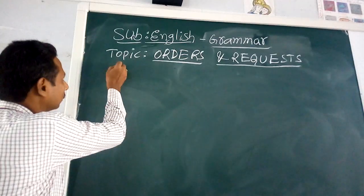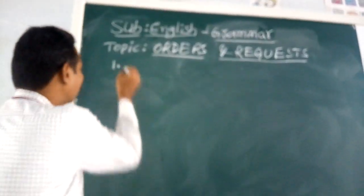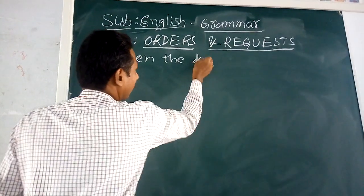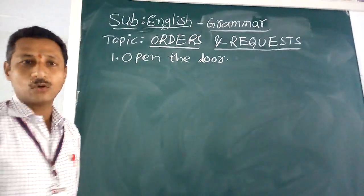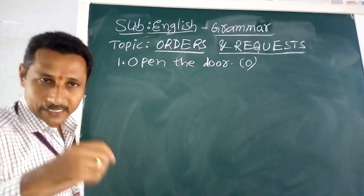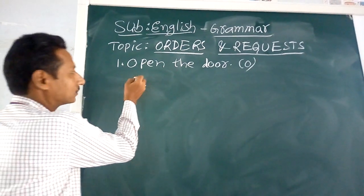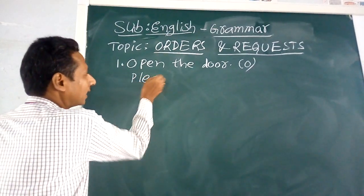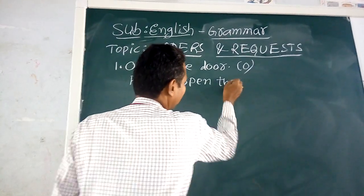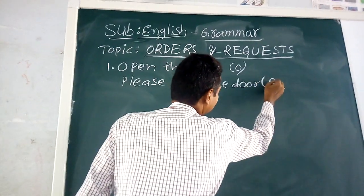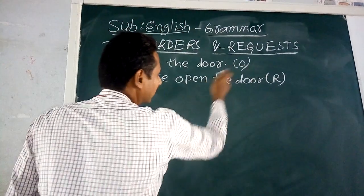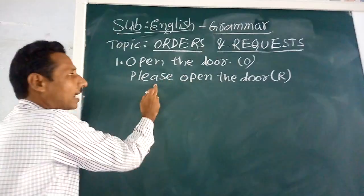First example: 'Open the door.' This is like an order. Next, we will change this sentence into a request sentence: 'Please open the door.' This is a request sentence.